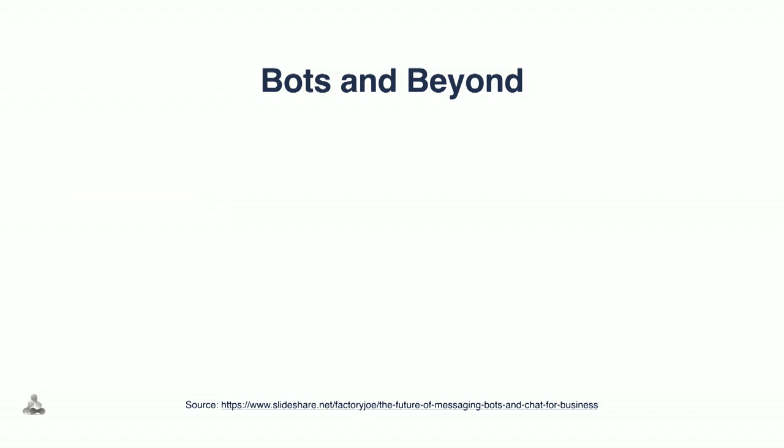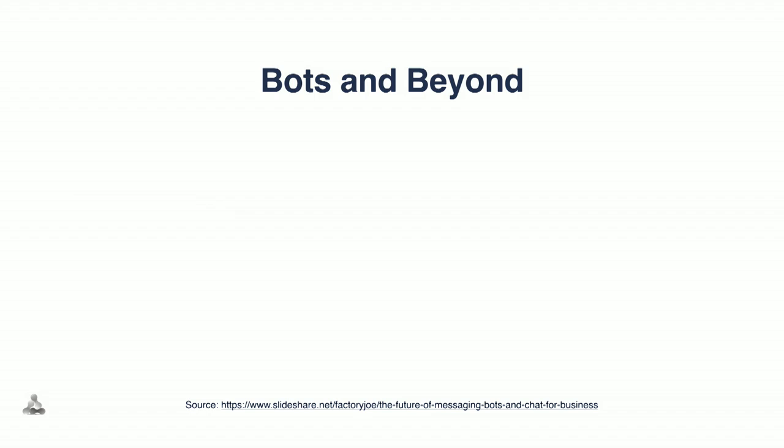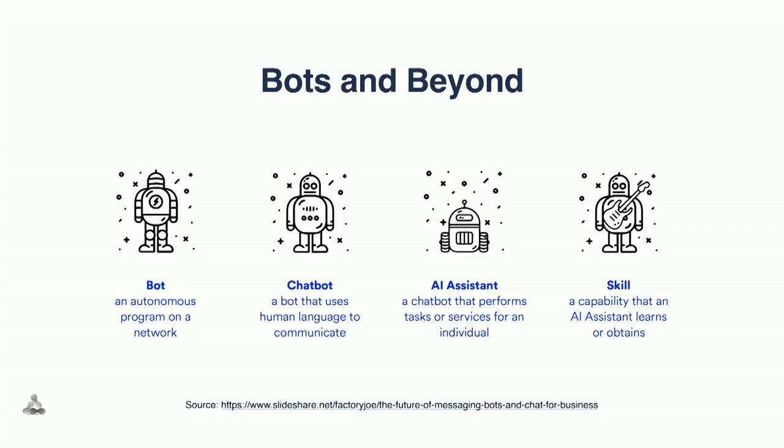Let's start off with the general landscape of bots. A bot is just a piece of automation, usually mimicking either robotic automation or, increasingly, even human automation with the rise of NLP and machine learning. Bots are starting to seem more and more user-friendly. And then you also have chat ops, which is a more chat-centric, text-form of bot automation.